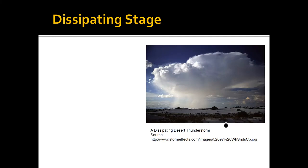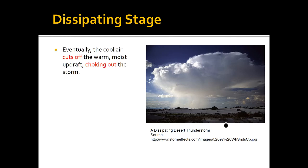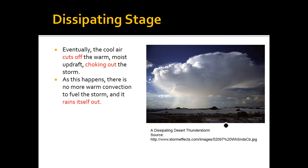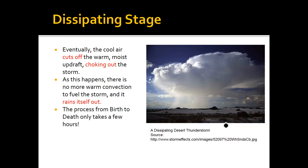The thunderstorm eventually dies and enters what's called the dissipating stage. At this point, the cool air has cut off the warm moist air, the food is gone, and the thunderstorm begins to fall apart — it simply rains itself out. The process from birth to death typically only takes a few hours. This dissipating stage is crucial because this is how thunderstorms die. In the next lecture we'll talk about severe thunderstorms, which have something that prevents them from transitioning into the dissipating stage.